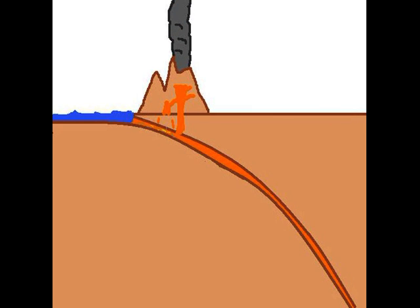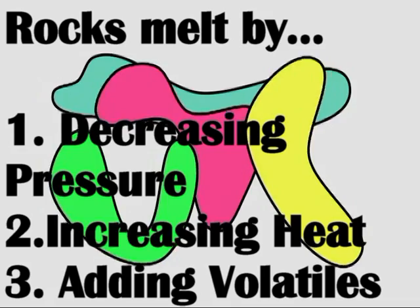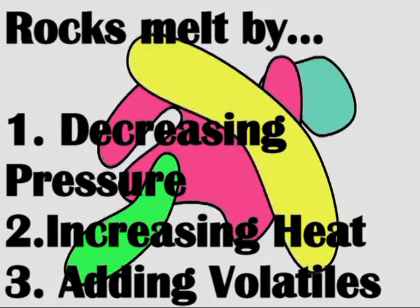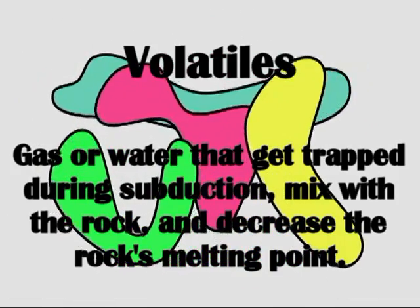Volcanoes can form at convergent boundaries where an ocean plate underrides a continental plate. When the ocean plate subducts underneath the continental plate, it crushes up the land. Volcanoes can form when rocks melt in one of three ways: by decreasing pressure, by increasing heat, or by adding volatiles.